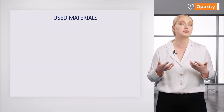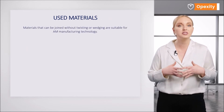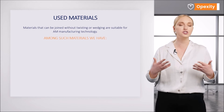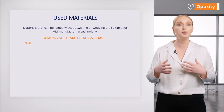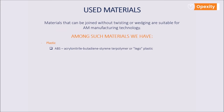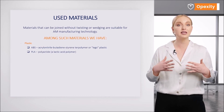Does additive manufacturing have limitations? Of course. One of them is the material you can use. Generally, materials that can be joined together without twisting or welding are suitable for this manufacturing technique. These are plastics — the first material used in the process. There are two basic types: ABS, acrylonitrile butadiene styrene, also known as Lego plastic, which is currently most commonly used for 3D printing, and PLA, polylactide, a lactic acid polymer available in soft and hard varieties. It is becoming increasingly popular and may soon displace ABS because it is completely biodegradable.